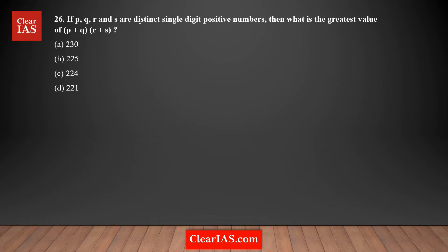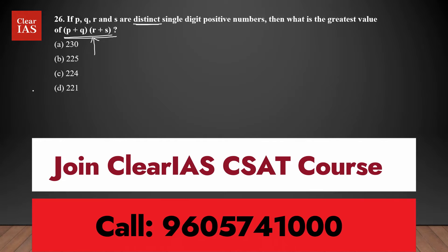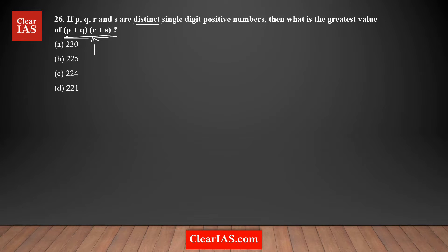If p, q, r, s are distinct single-digit positive numbers — remember, all of them are different — what is the greatest value of (p + q) multiplied by (r + s)? To maximize this product, we need the highest possible digits. Since all are distinct, the highest possible digits are 6, 7, 8, and 9.